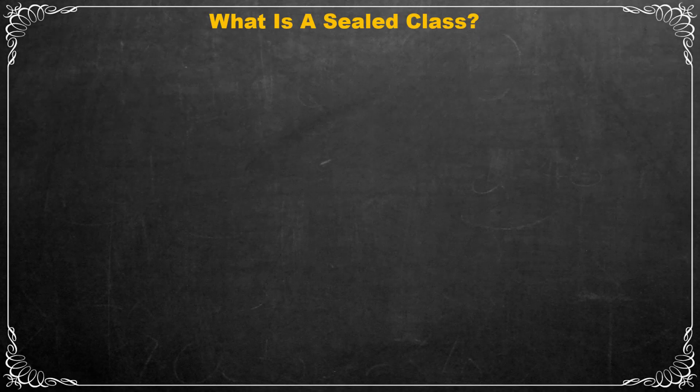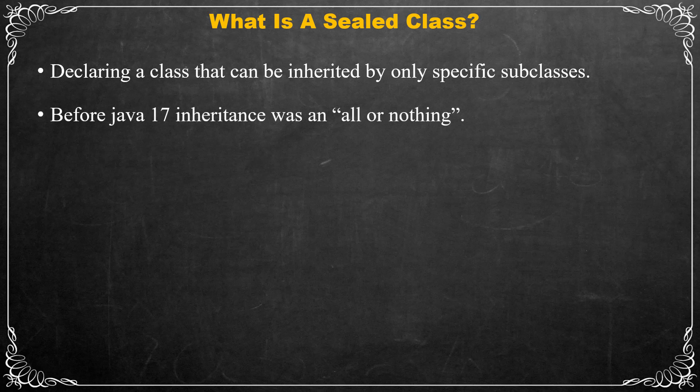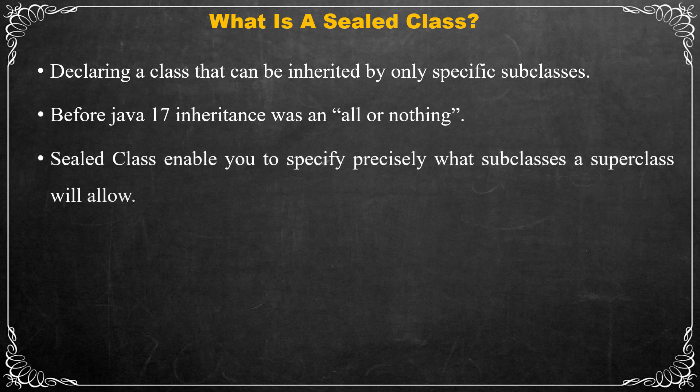What is a sealed class in Java? After Java 17, it is possible to declare a class that can be inherited by only specific subclasses — we call it a sealed class. Before this feature, inheritance was an all-or-nothing situation: a class could either be extended by any subclass or marked as final, which prevents its inheritance entirely.